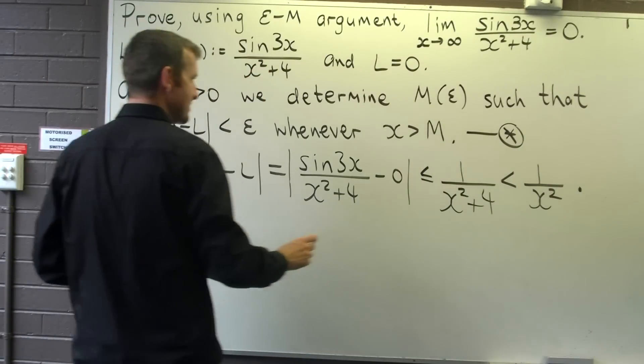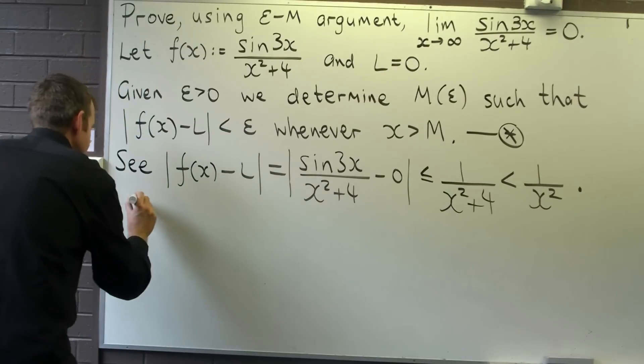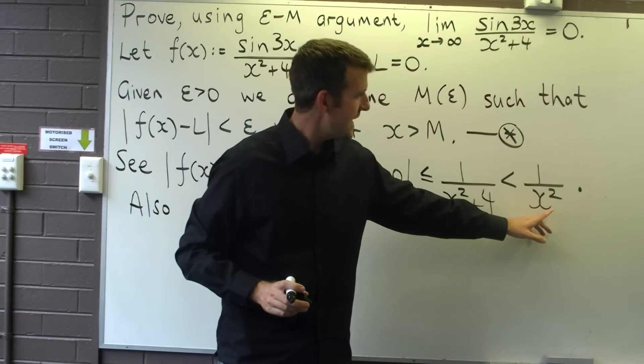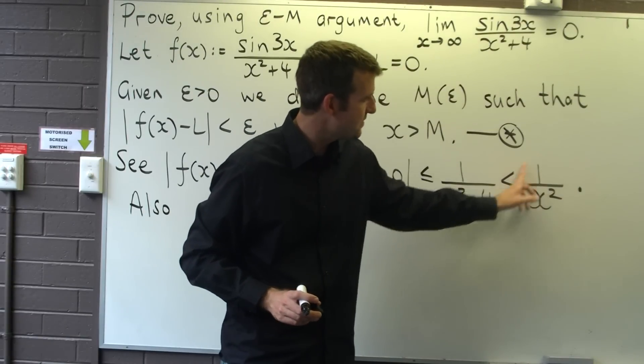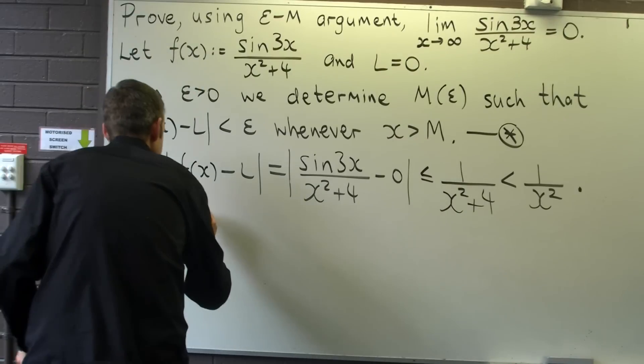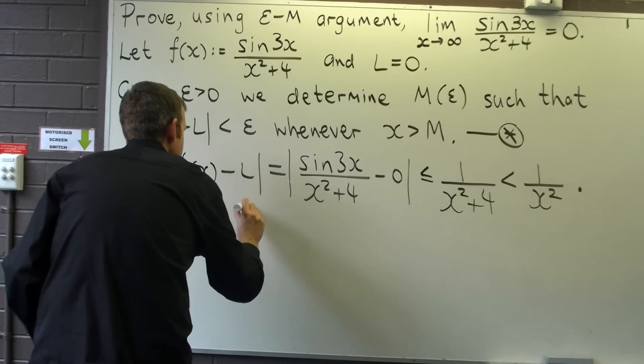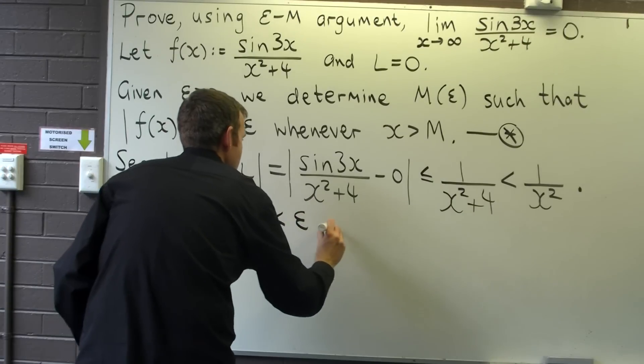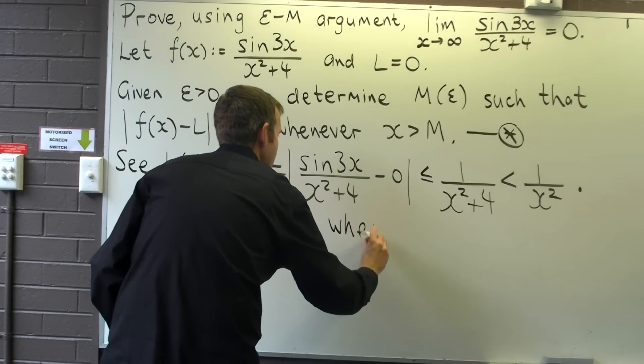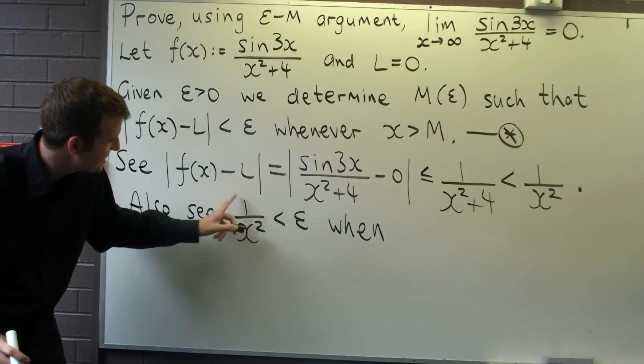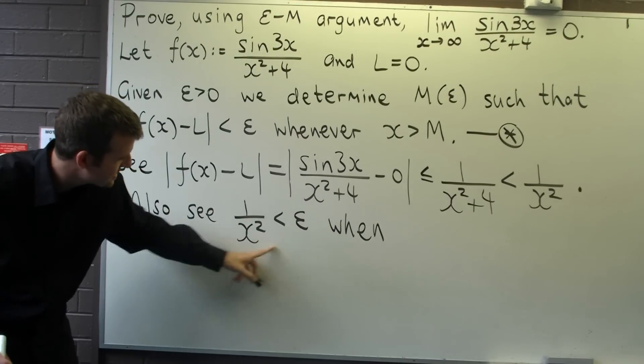So what I want to do now is I'm going to find out how big x needs to be to make 1/x² less than epsilon. So let's determine how big x needs to be for this to be true.